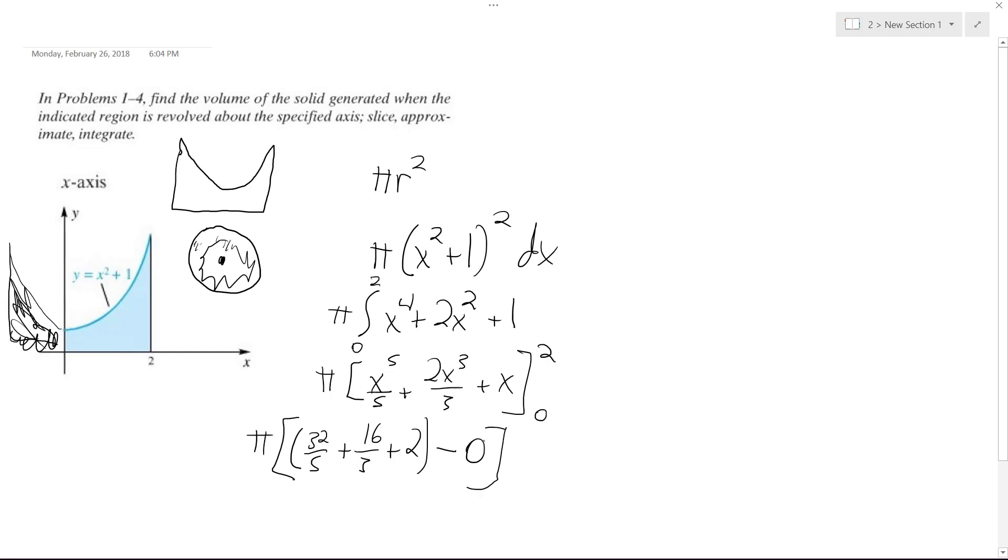All right, so what we end up with when you combine all these terms is, when you get a common denominator, it's not the prettiest thing, but we get 206 pi over 15, or approximately like 43.1. All right, I hope this helps you out. Thanks for watching. Have a great day.